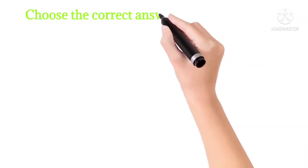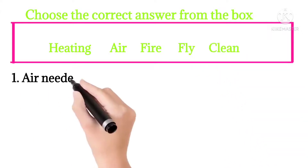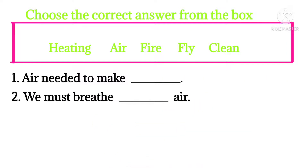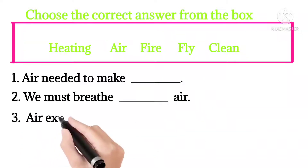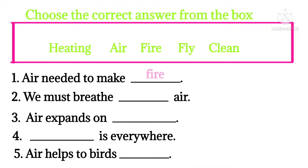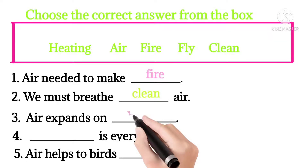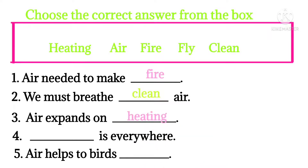Choose the correct answer from the box — heating, air, fire, fly, clean. Question 1: Air is needed to make fire. Air keeps the fire burning. Question 2: We must breathe clean air. Dirty air makes us ill. Question 3: Air expands on heating. Question 4: Air is everywhere. Question 5: Air helps birds fly.